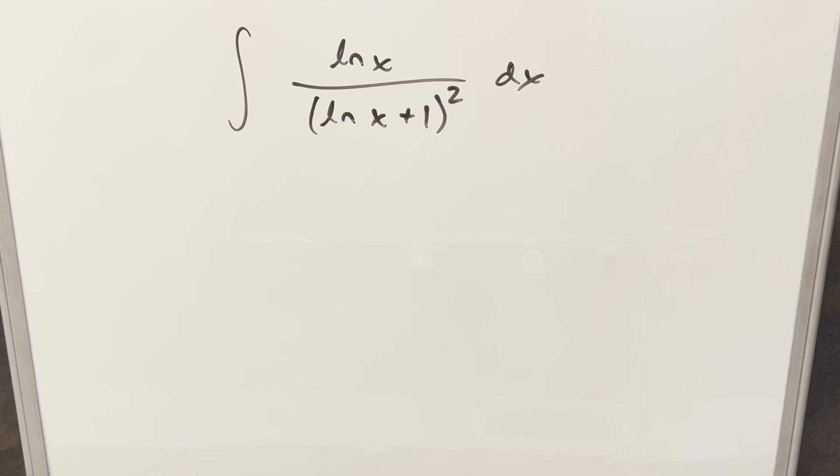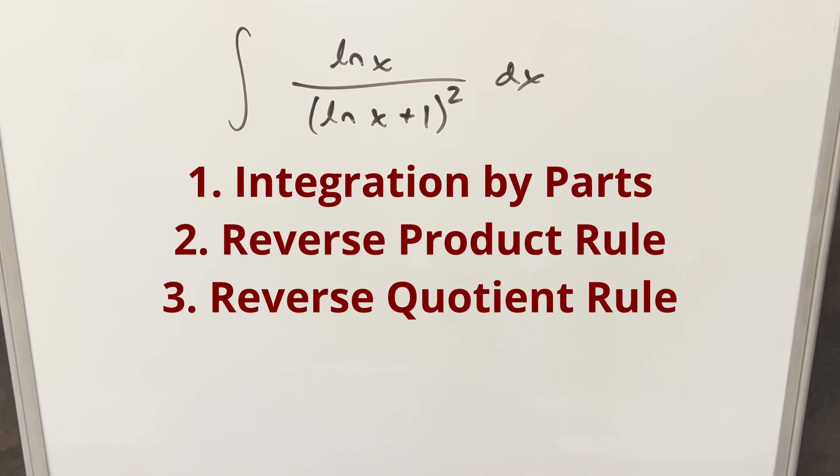I know exactly three different ways to do it, and they're all kind of the same thing. One is integration by parts, two is reverse product rule, and three is reverse quotient rule.